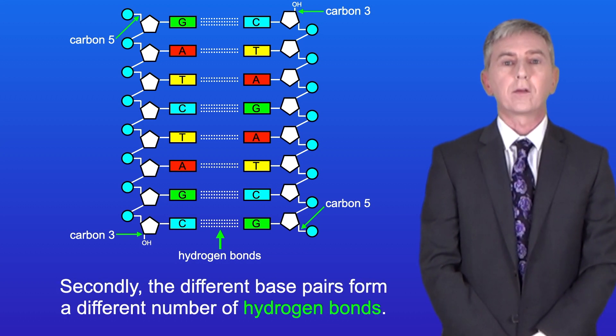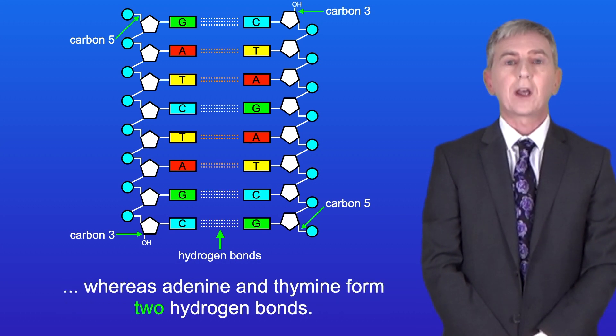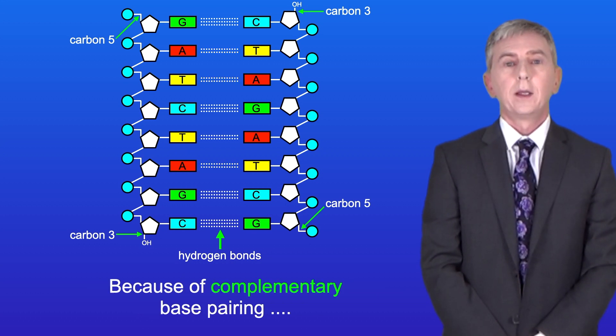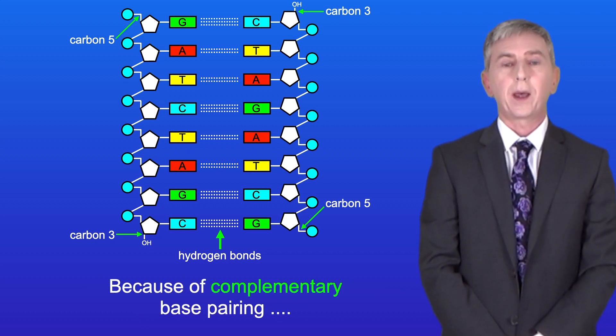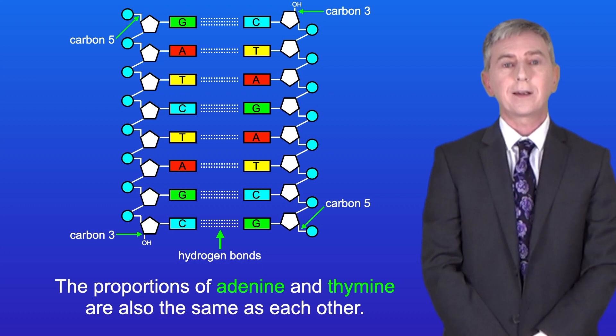Secondly the different base pairs form a different number of hydrogen bonds. Guanine and cytosine form three hydrogen bonds whereas adenine and thymine form two hydrogen bonds. Now because of complementary base pairing the proportions of guanine and cytosine are always the same as each other and the proportions of adenine and thymine are also the same as each other.